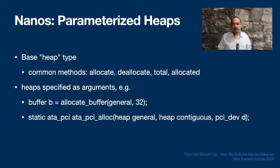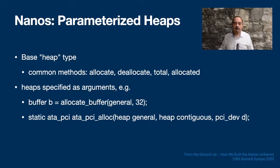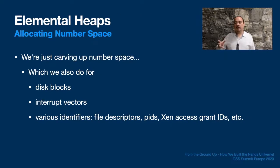In Nanos, our allocators are called heaps. We have an abstract heap-based type with familiar allocate and deallocate methods. When we create an instance of some data structure, initialize a subsystem of the kernel, or invoke a probe function for a device, we specify the allocator or allocators to use as arguments. Perhaps most allocations are used for internal data structures with no special constraints needed — these are typically covered by a general heap parameter. Another type of allocation is for physically contiguous memory, which are usually just called contiguous.